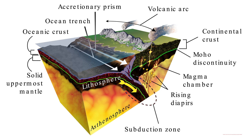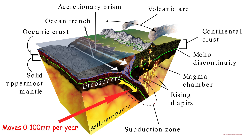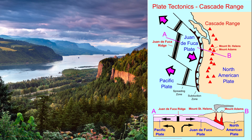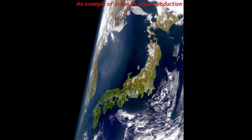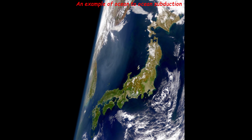Convergent boundaries arise when two plates slide towards each other. The thick oceanic lithosphere plunges into the less dense continent during zones of ocean to continent subduction. An example of this is the Cascade mountain range in the United States of America. Older, colder, denser crust slides beneath less dense crust at zones of ocean to ocean subduction. An example of this are the islands of Japan.